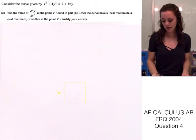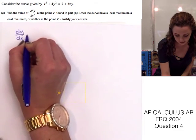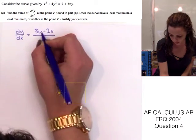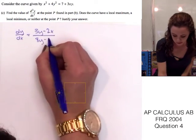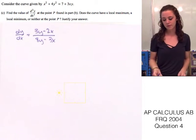Let's start by writing the equation for the derivative, which is dy over dx is equal to 3y minus 2x over 8y minus 3x. And, I'm also going to write the values of the point P, which is 3, 2.